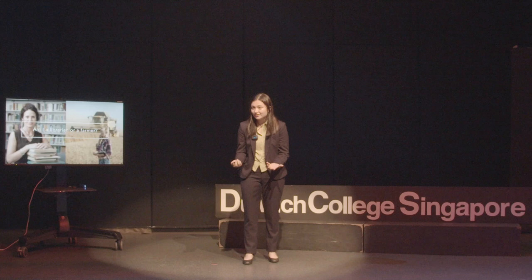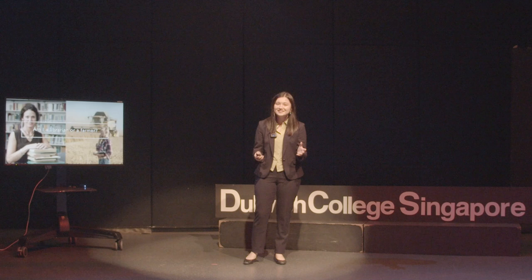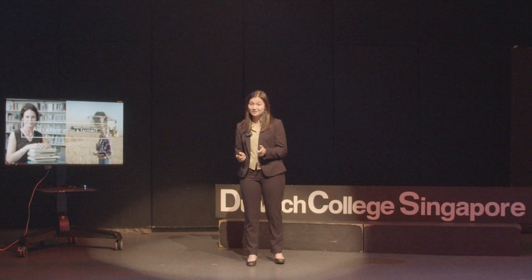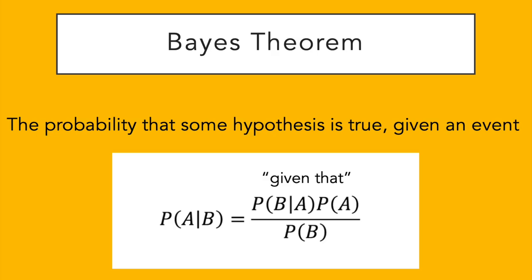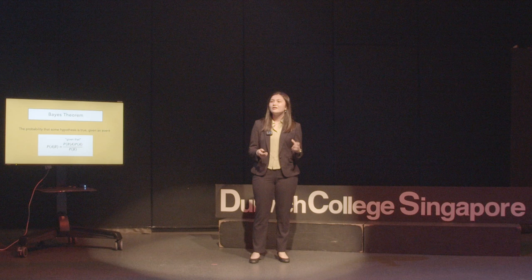Most people would think it's more likely that I'm a librarian, because the description closely aligns with the stereotypical expectation of what a librarian would be. However, that's where you're wrong — it's actually more likely for me to be a farmer. And I'm going to tell you why. This is exactly why you need to use Bayes theorem, so you can get some perspective.